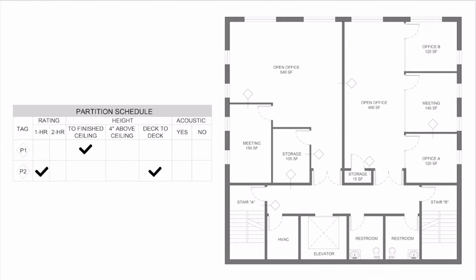Let's look at these partition locations one by one and identify if they need to be one hour rated or not. Here is our floor plan and partition schedule that the NCIDQ exam is giving us. This is an example — you will probably see a lot more partition types like P3, P4, and the partition schedule may only be halfway filled out. For the purposes of this video, I'm giving you P1 and P2 as two different partition types, already filled in with the information.